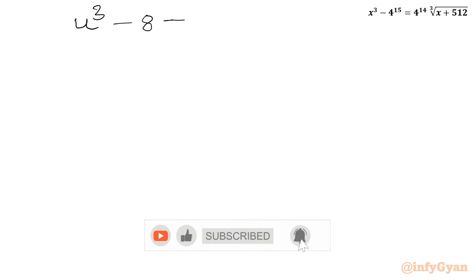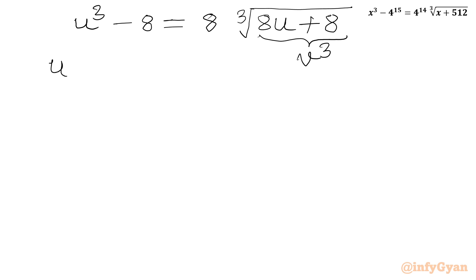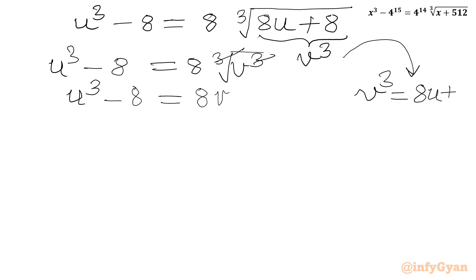Now I will write our equation: u cube minus 8 equal to 8 times cube root of 8u plus 8. Now I will consider 8u plus 8 equal to V cube. So our equation becomes u cube minus 8 equal to 8 times cube root of V cube. The cube and cube root cancel, giving us u cube minus 8 equal to 8V. And from this substitution I can write V cube equal to 8u, or V cube minus 8 equal to 8u.